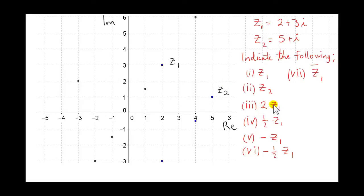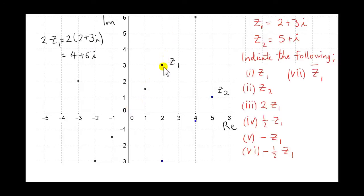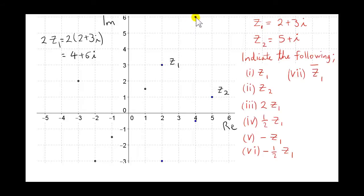Now let's look at twice z1 — we multiply 2 plus 3i by 2, so we multiply the real part by 2 and the imaginary part by 2. This has the effect of scaling the complex number. If we draw a line from the origin to z1 and double its length, we end up at the complex number 4 plus 6i, which is 2 times z1.